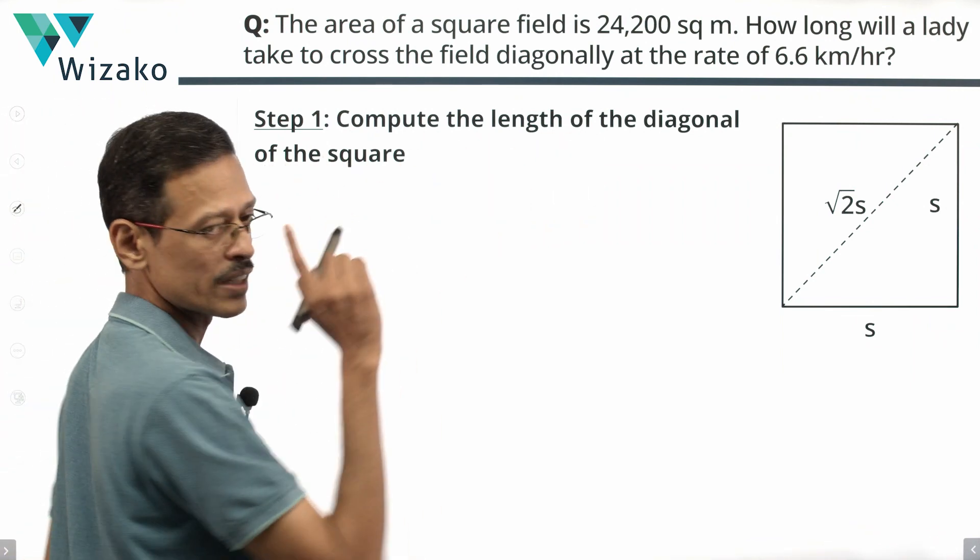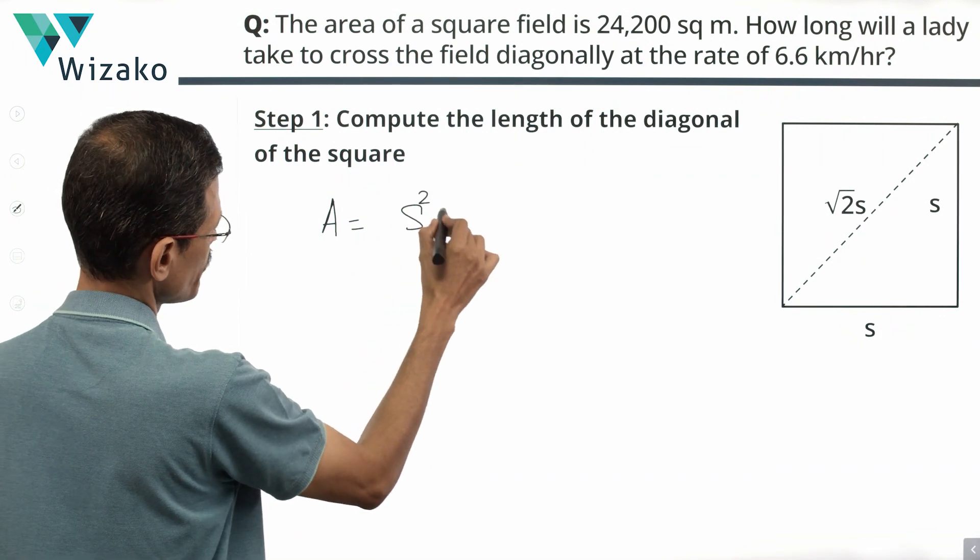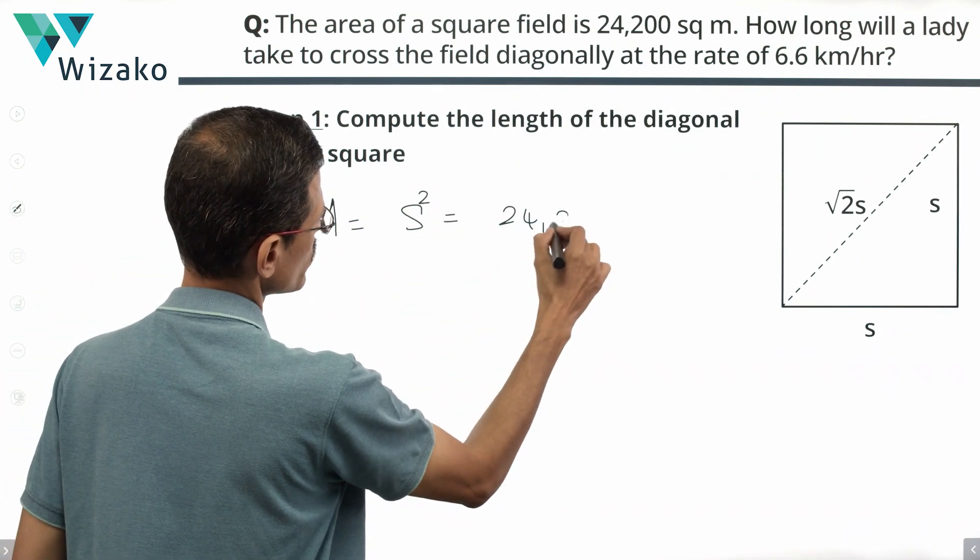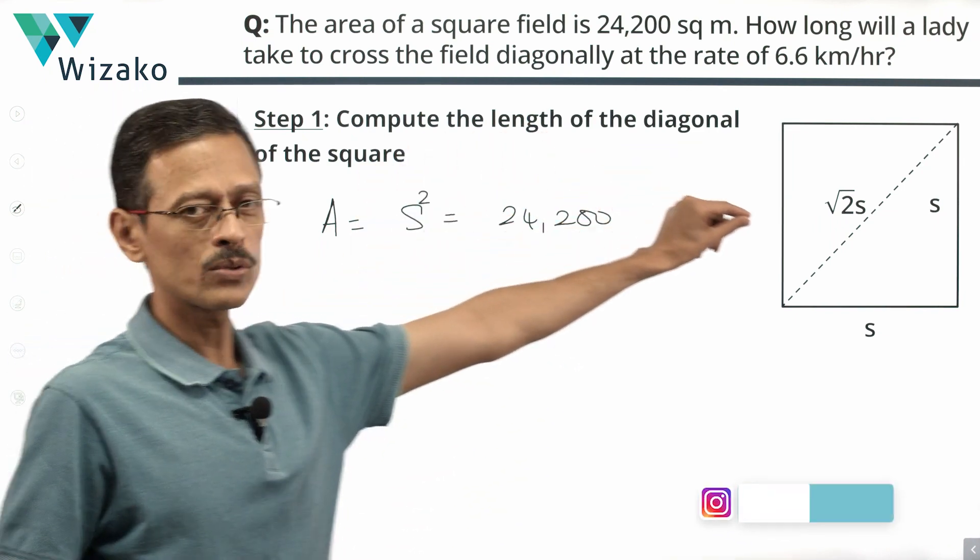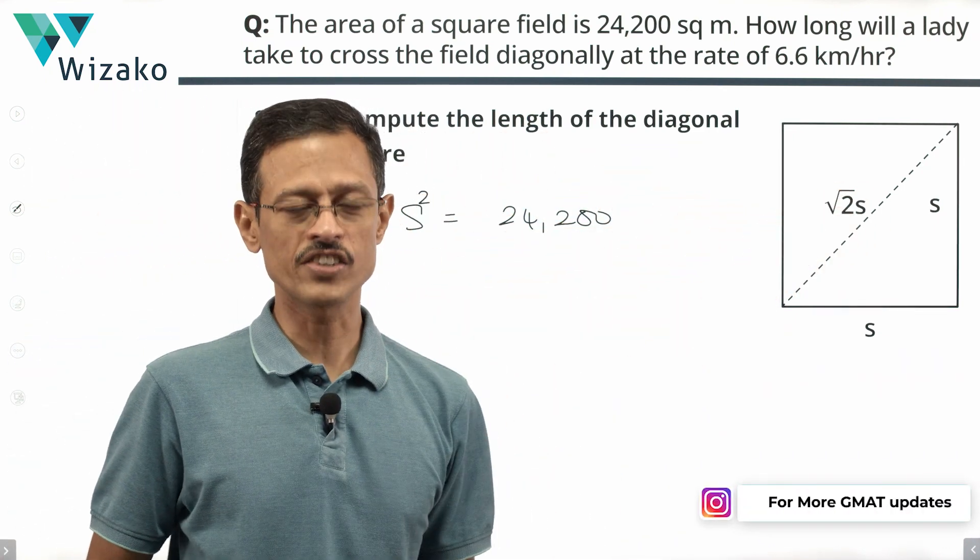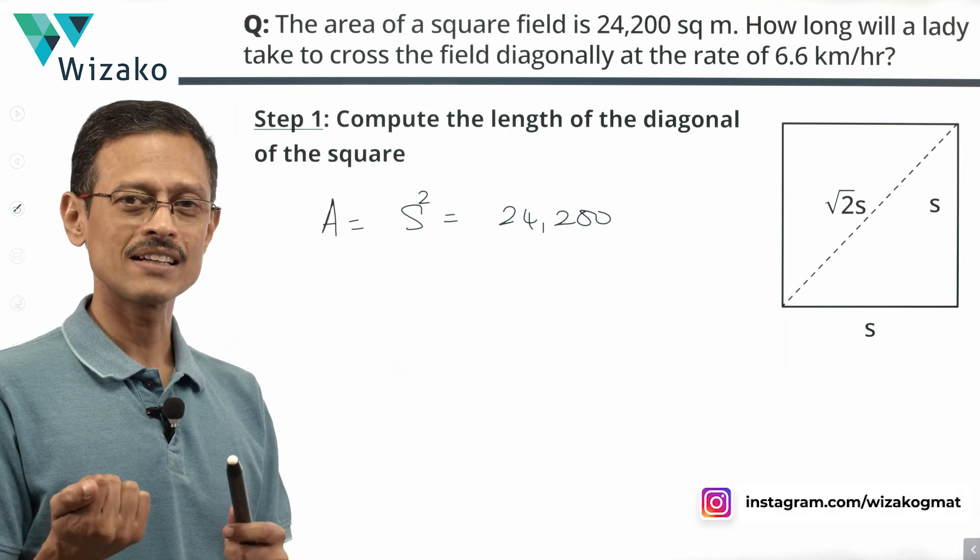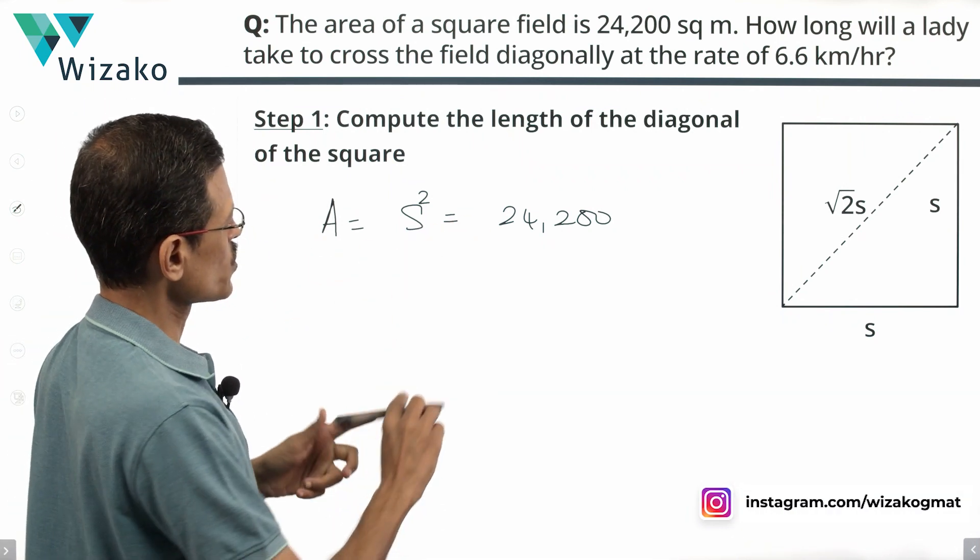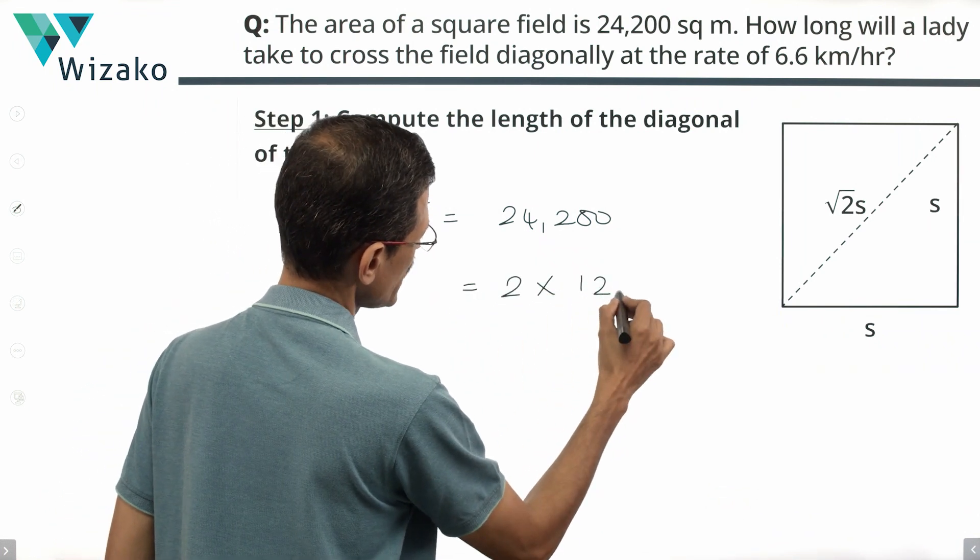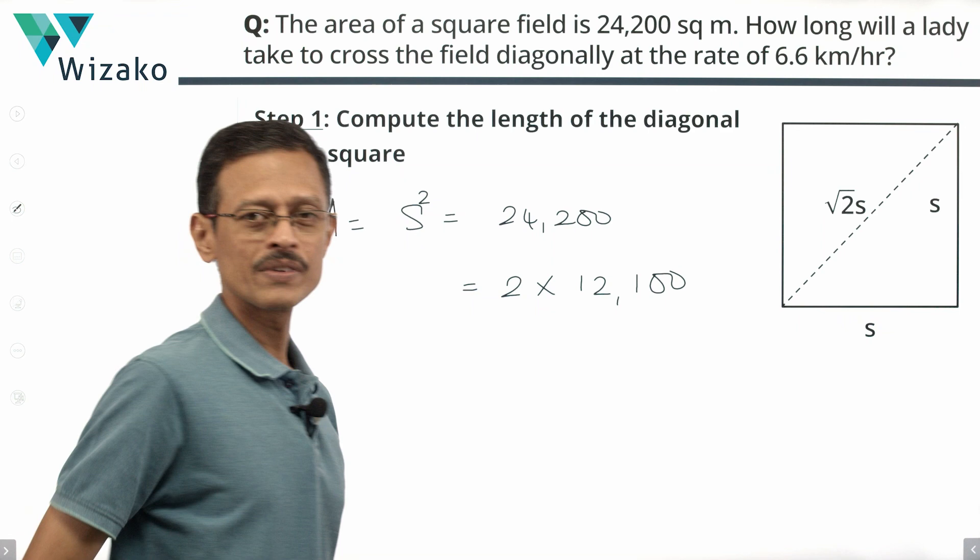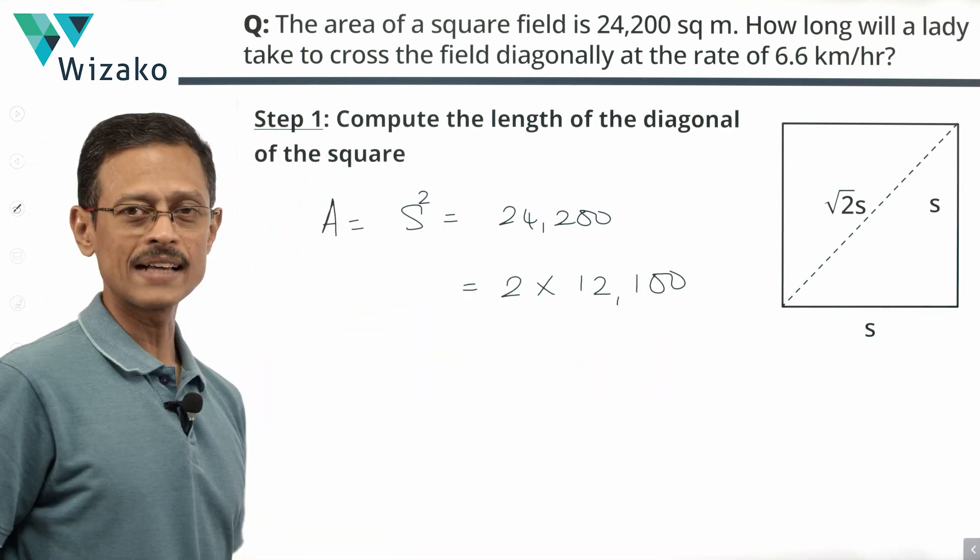Area is given to be equal to 24,200. Step one, I'm going to compute the diagonal. So area equals s squared which equals 24,200. Let's compute s. From there let's compute root 2s. That will give us the distance that she is walking. This 24,200, the moment I see it, what comes to my mind is, this is probably 2 times 12,100. This is a perfect square.